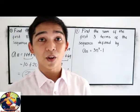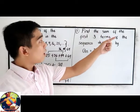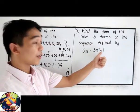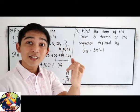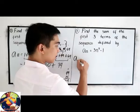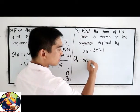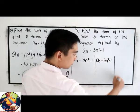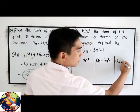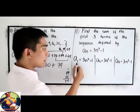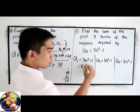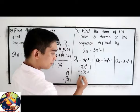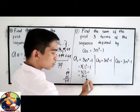Our second example: find the sum of the first three terms of the sequence defined by an equals 3n squared minus 1. So let us write the first term by substituting n equals 1: 3 times 1 squared minus 1 equals 3 times 1 minus 1 equals 3 minus 1, which is 2.